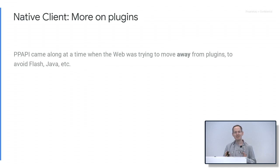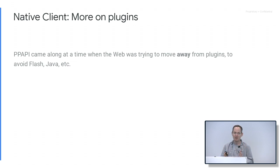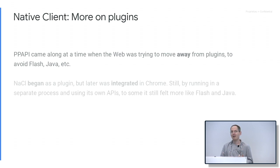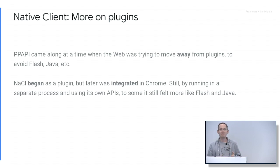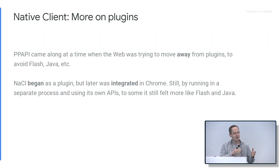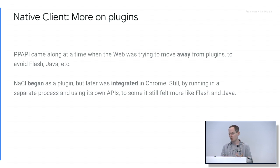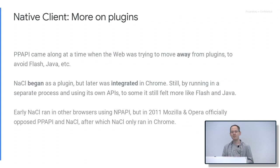More plugin context: this is around 2008–2010, about the time when the web was trying to move away from plugins. Web developers were being told: don't use Flash, don't use Java, just use HTML and JavaScript. For Native Client, this was a problem in that it began as a plugin — it used NPAPI or PPAPI. It was later integrated into the browser, at which point it's not a plugin; it's just part of the Chrome platform. But by running in a separate process and having a new set of APIs very different from existing web APIs, it still felt more like Flash and Java to other people.